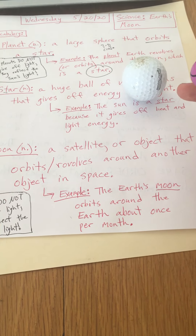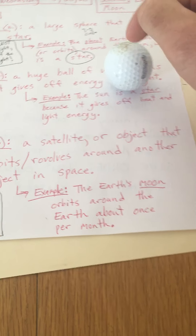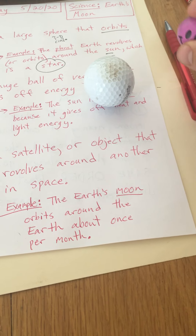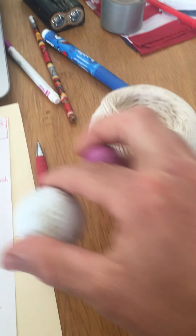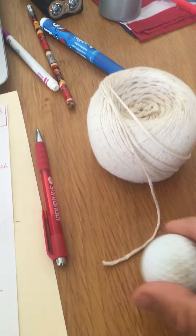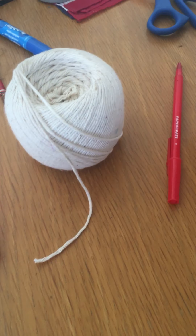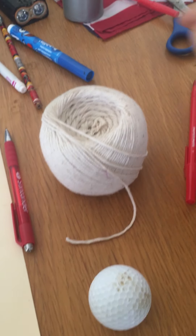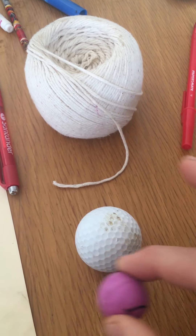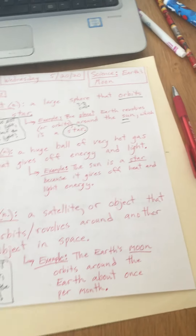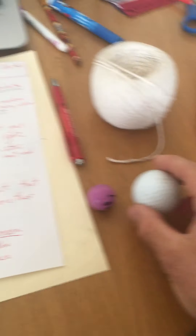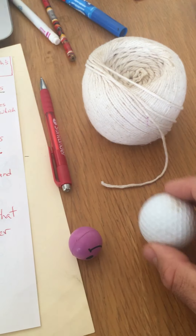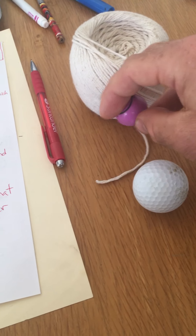The moon is an object that orbits around another object in space. For us, that other object is our planet Earth — the moon orbits around the Earth. The Earth orbits or revolves around the sun, and at the same time the moon orbits or revolves around the Earth. It takes a whole month for the moon to go all the way around the Earth, and it takes a whole year for the Earth to go around the sun once.